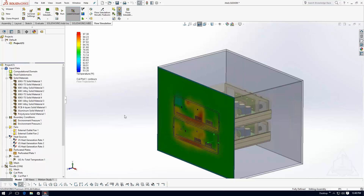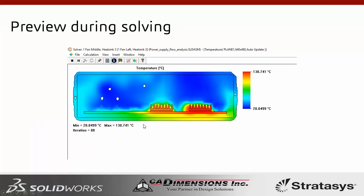One last thing to share: Flow Simulation allows you to preview results while the analysis is solving. Within the first few minutes you can see a preview that tells you whether the analysis is set up correctly. In this case it looks very realistic — heat being generated by the components, the heat sink cross-section, and the air temperature are all visible. This is the cross-section of the single unit showing heat generation and airflow.